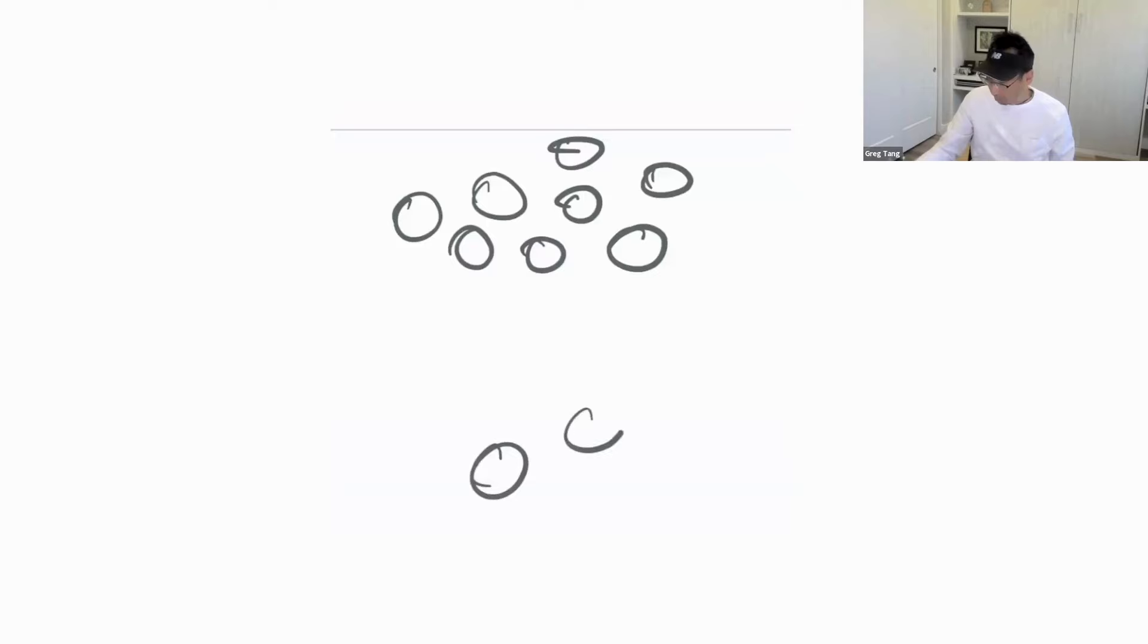Because a kid could go like this. And no matter how you arrange them, they could tell it's five with practice. But even with practice, humans can't tell nine like that. They can't subitize it even with practice.